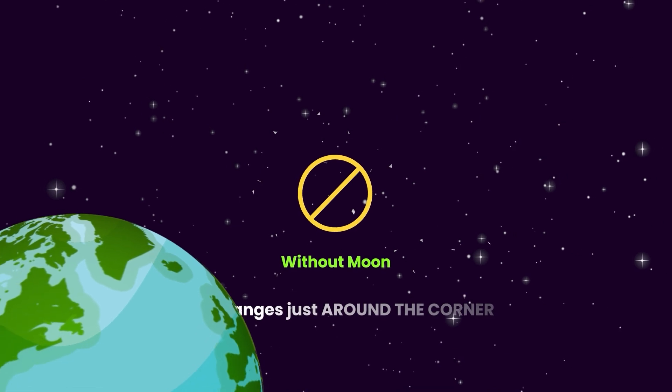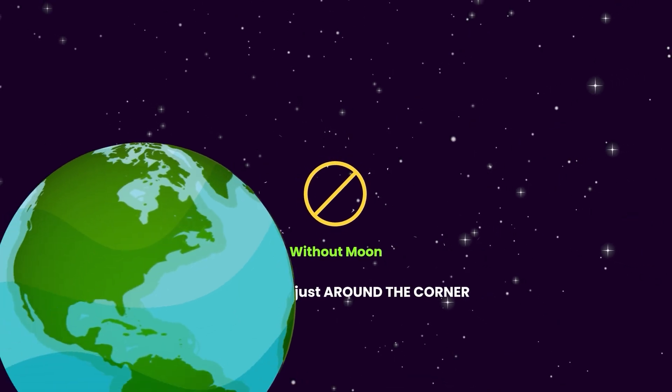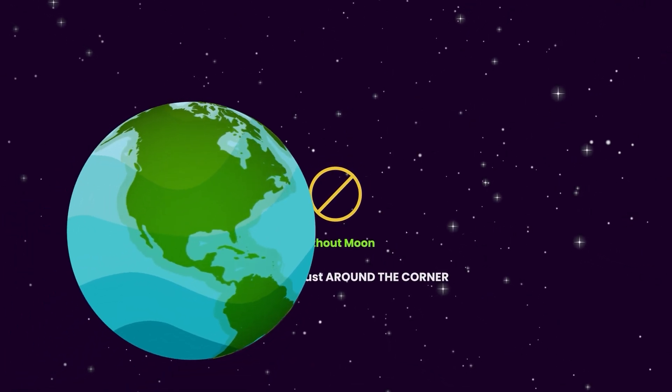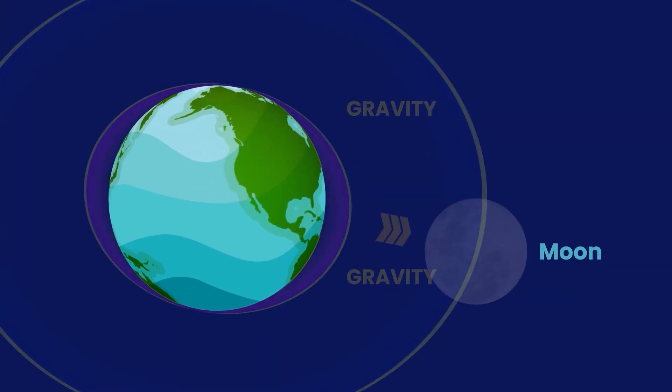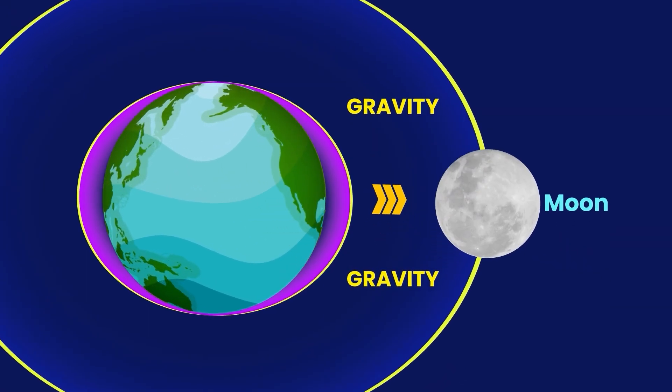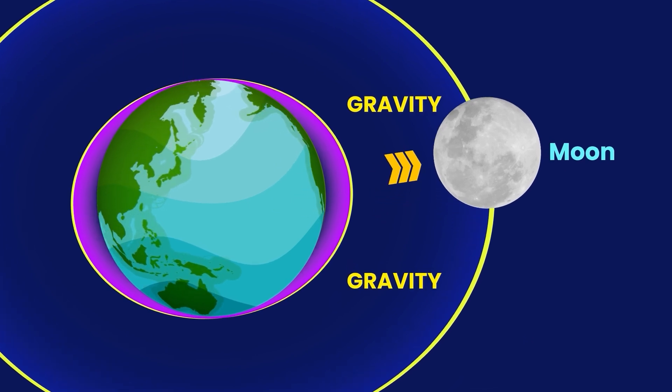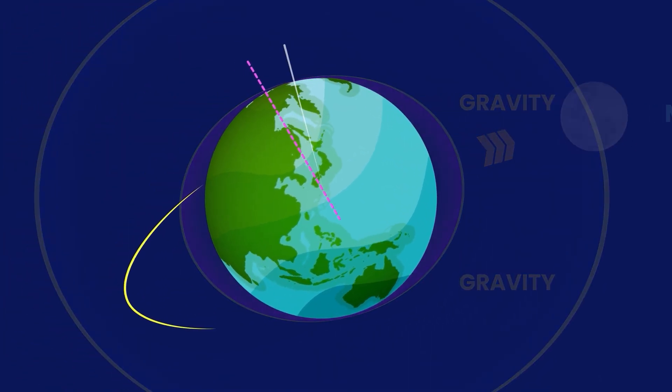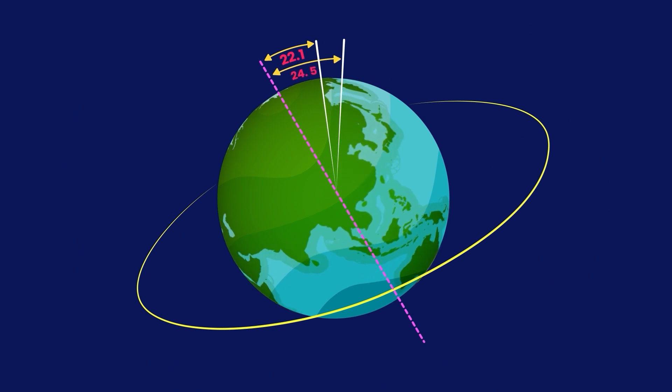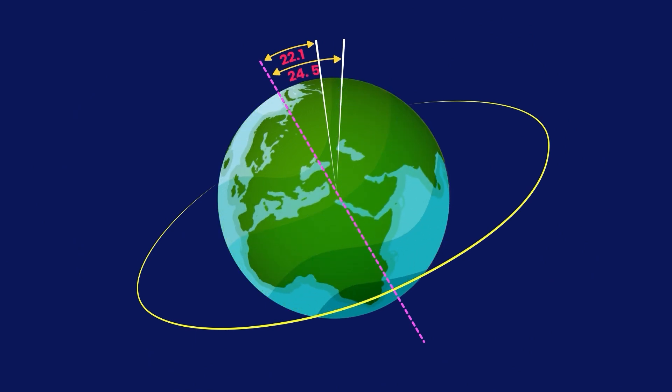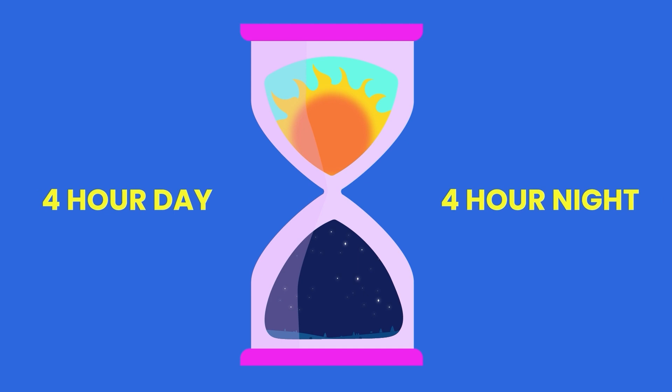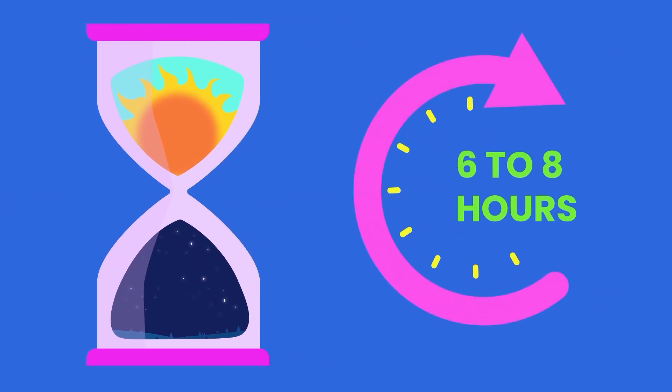But there are other changes just around the corner, and without our moon, there is nothing we can do to stop them. The moon's gravitational attraction was what kept our Earth spinning slow and steady. With the moon now gone, the Earth begins to rotate faster than it did before. Our days get shorter. How short? An entire day is now just six to eight hours in length.